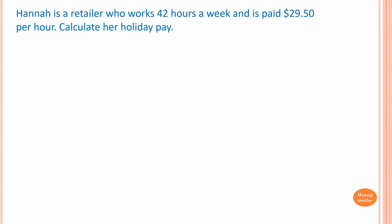Hannah is a retailer who works 42 hours a week and is paid twenty-nine dollars and fifty cents per hour. Calculate her holiday pay. First we need to work out how much she earns in one week: 42 hours times twenty-nine dollars fifty cents per hour. Then we multiply by four to get four-week pay, because holiday pay is four-week pay plus 17.5 percent of four-week pay.